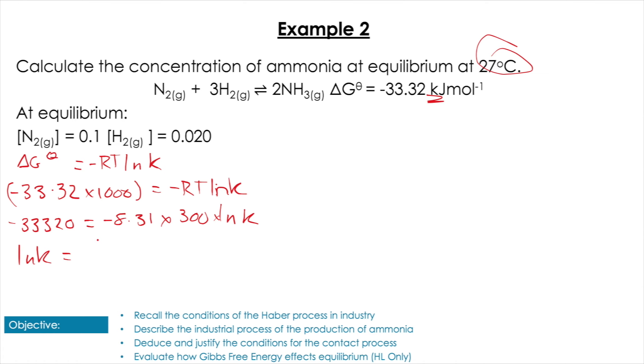And then I'm just going to pop that in my calculator—both of those being negative there. It's going to give me 13.37. Then I just take the natural log of it and I get 637,572.